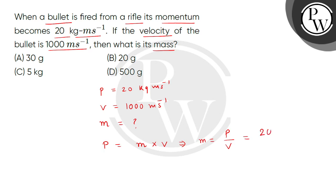Linear momentum value is 20 and velocity value is 1000. This will be 2 multiplied by 10 to the power minus 2, which is in kg.